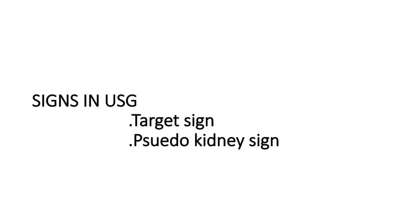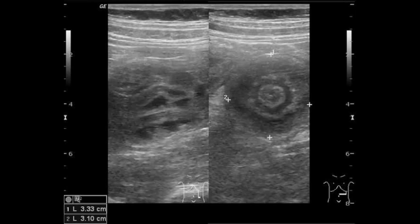In USG or ultrasonography, there are also two signs. The first is the target sign, which means there is a bowel-in-bowel appearance. The second is the pseudo kidney sign — because the cecum is telescoped into the colon, on USG it appears like a pseudo kidney. So in USG: target sign and pseudo kidney sign.